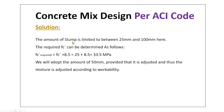Solution: the slump is limited to 25 mm to 100 mm because the structure type is beams. The required FC' is determined by adding 8.5 MPa to the specified 25 MPa (per ACI, since FC' ≤ 25 MPa), giving a required FC' of 33.5 MPa. We will adopt a slump of 50 mm, to be adjusted based on workability.